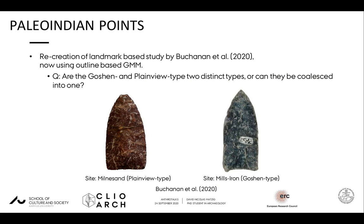One of the case studies we chose is the one of Buchanan et al. from 2020, who took on the long debated and still unresolved relationship between the late Paleo-Indian projectile points from the central United States, the Goshen and Plainview type. Due to an ambiguous chronology and typological similarity, it's not clear whether these two groups should be kept separate or consolidated into one. By applying landmark-based geometric morphometrics and statistical testing on a sample of Goshen and Plainview type points, their results indicate that the two groups cannot be separated, and they suggest the Goshen type to be incorporated into the Plainview group.